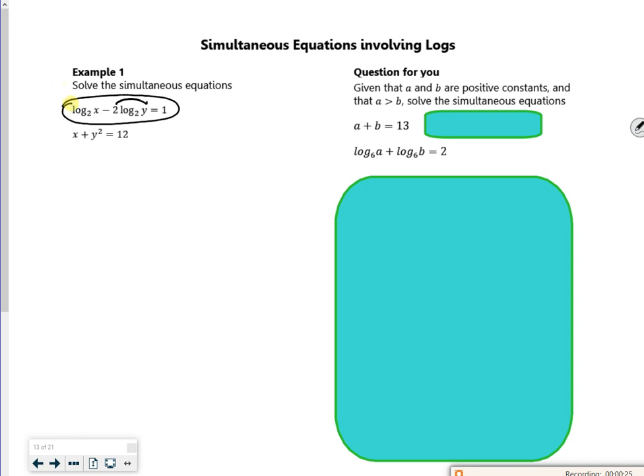So I take that 2 up as a power, I've got log to base 2 of x minus log to base 2 of y is equal to 1.